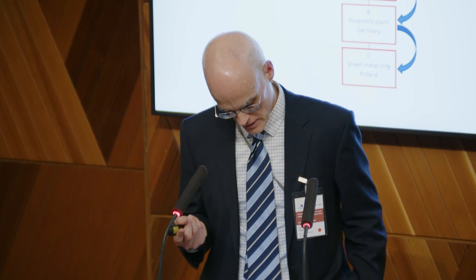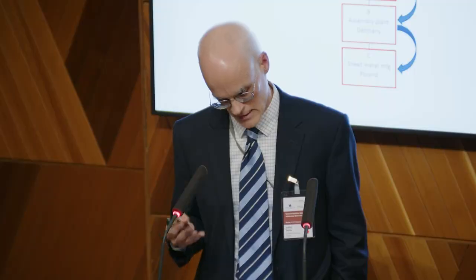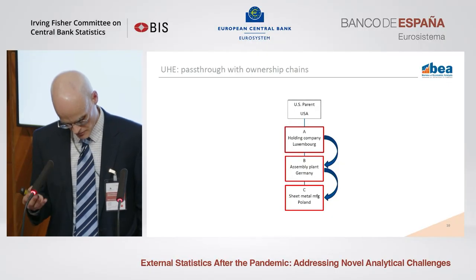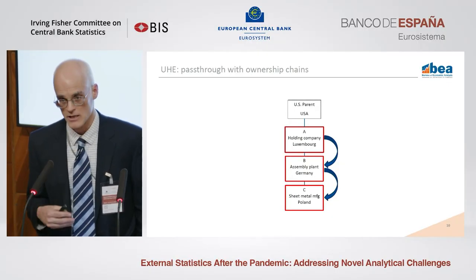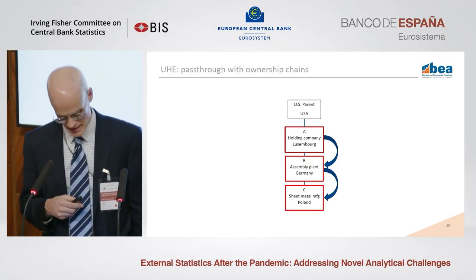With the pass-through-with-ownership-chains method, we end up with some position recorded in both Germany and Poland depending on their financial data, and we could also see some position remaining in Luxembourg depending on the financial data of that entity.